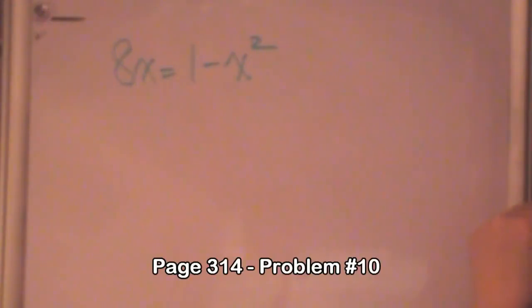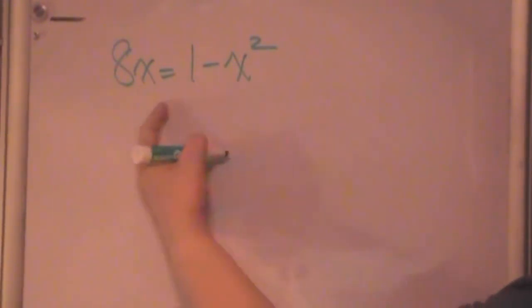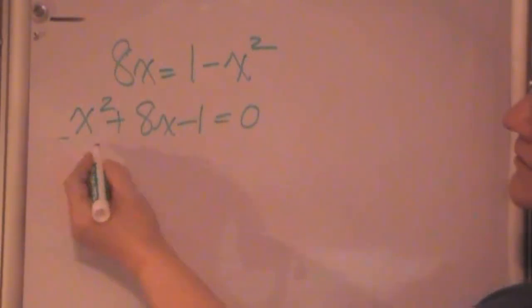In this case you might decide to subtract your 8x from both sides and that would be fine, and you'll get the same answer I do when you put them in order. But I prefer to work with my A as positive, so I'm going to put the x² over here and give it x² positive plus 8x minus 1 equals 0, because I put the 1 over there. So now my A is 1, B is 8, C is negative 1.